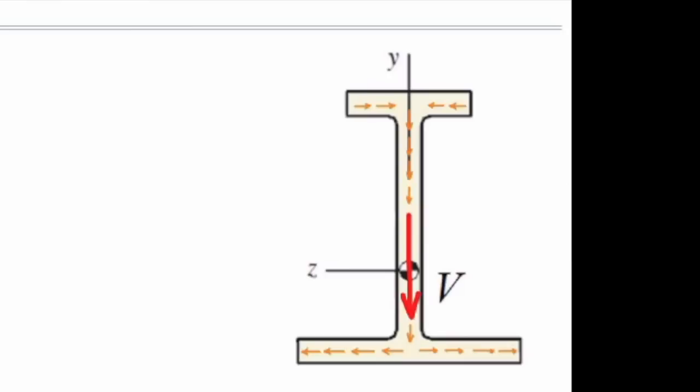When we get to the bottom point, the shear flow is splitting into two parts — half going to the left and half to the right — and it is equal to zero at the very right and bottom, and at the very left and bottom of this section. This is how shear stress flows across the section.